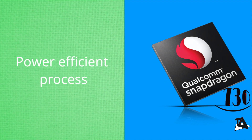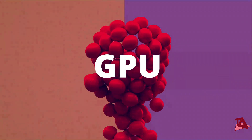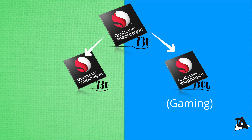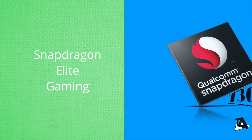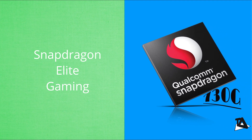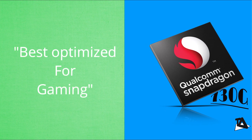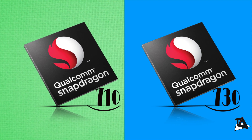Before diving into GPU performance, it's important to note that Snapdragon 730 has two variants: the Snapdragon 730 and 730G, where G stands for gaming. Both share the same Adreno 618 GPU, but the 730G features Snapdragon Elite Gaming — which debuted with the high-end Snapdragon 855 — plus an overclocked GPU, making it much more optimized for gaming.